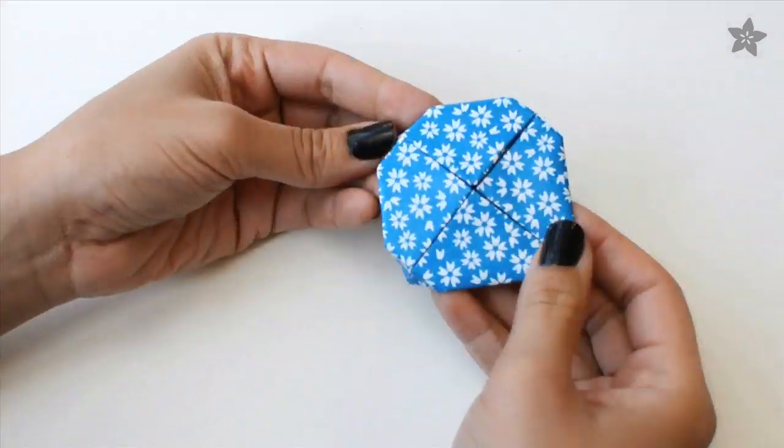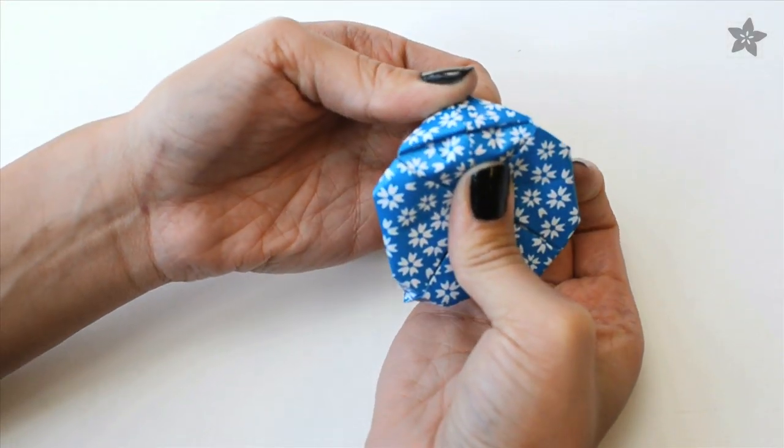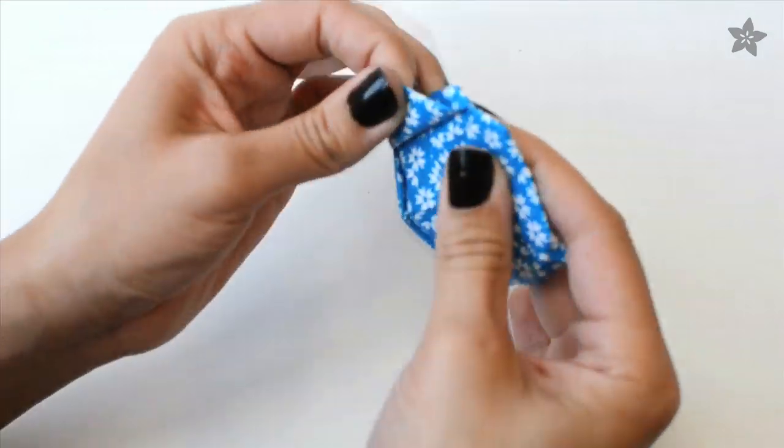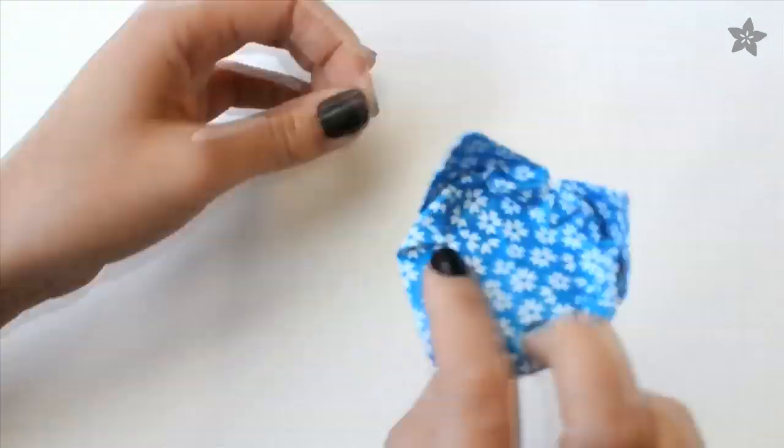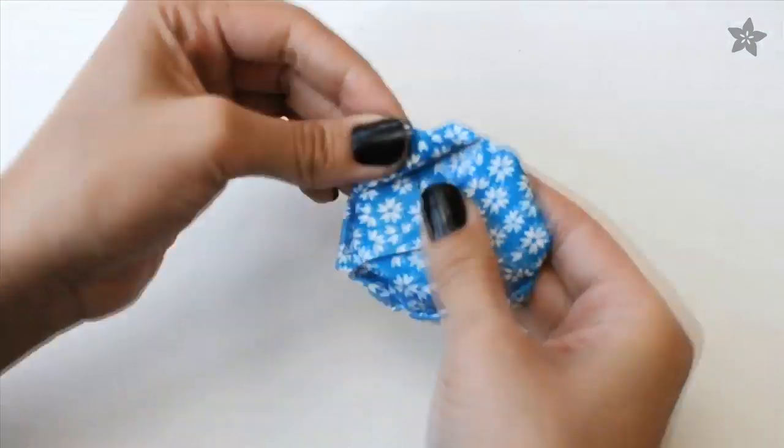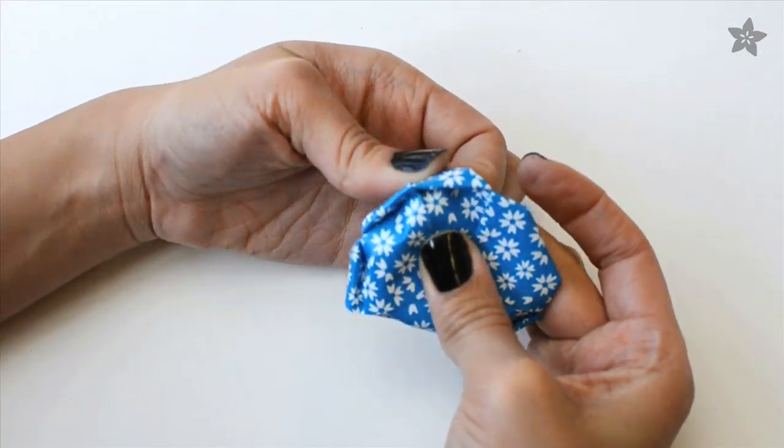Flip it back over and start peeling back the petals. You'll take them from the center towards the outer edge and around to the front of the flower, kind of like peeling off a pair of socks. Do this for all four petals in the first layer.